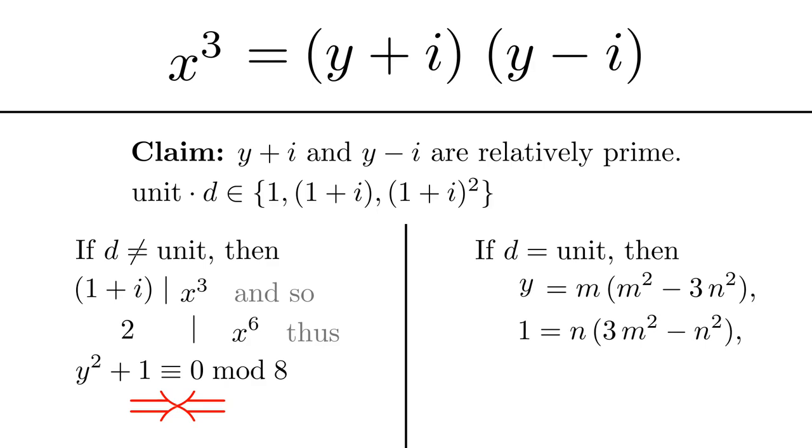So 1 = n(3m² - n²). That's what I got when I identified imaginary parts. And that means n is a factor of 1, so n can only be ±1.